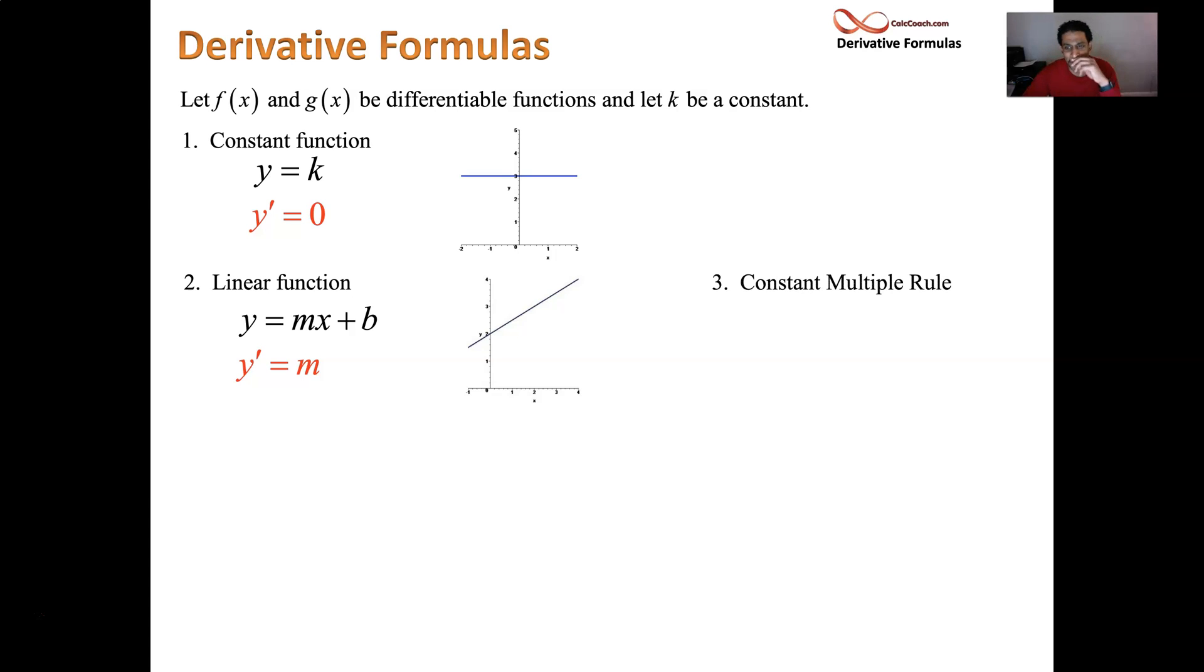Next up. What if you have a function, f of x, and it's multiplied by a constant, k? We want to take its derivative. The constant multiple rule says basically, just keep that constant and focus on the derivative of the function. y prime is equal to k times f prime. Constants, they get carried down.